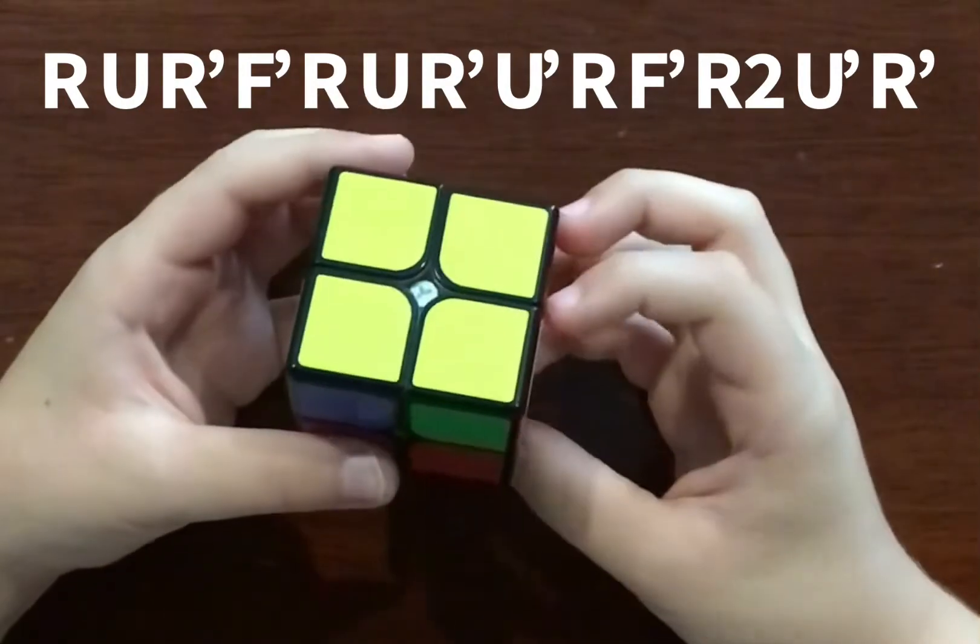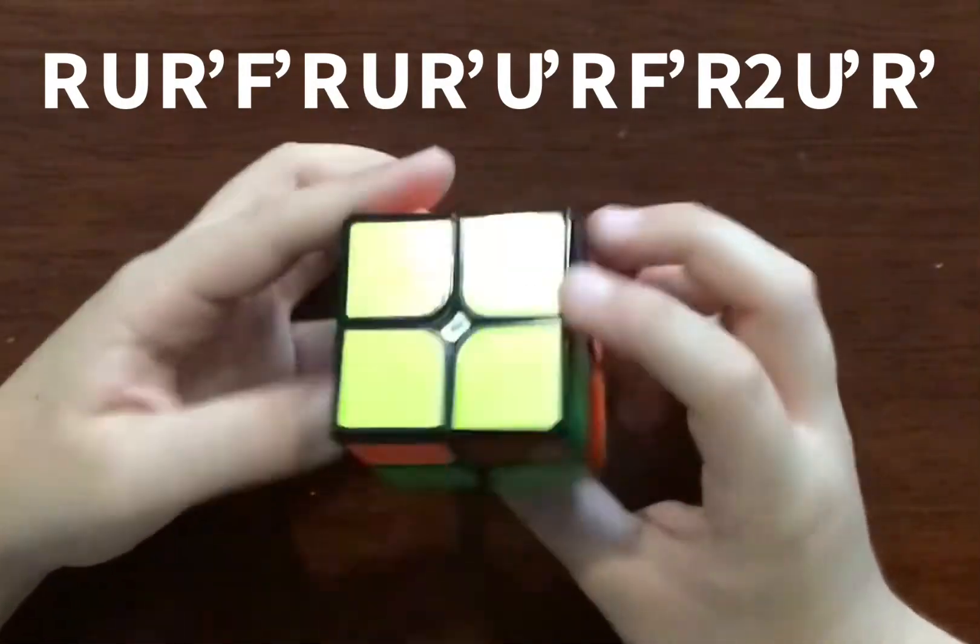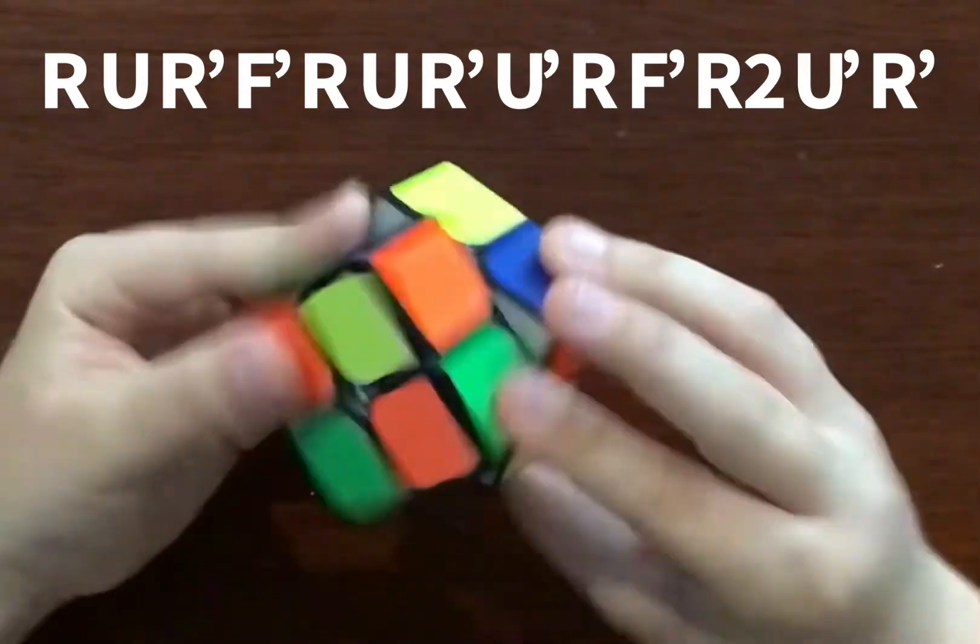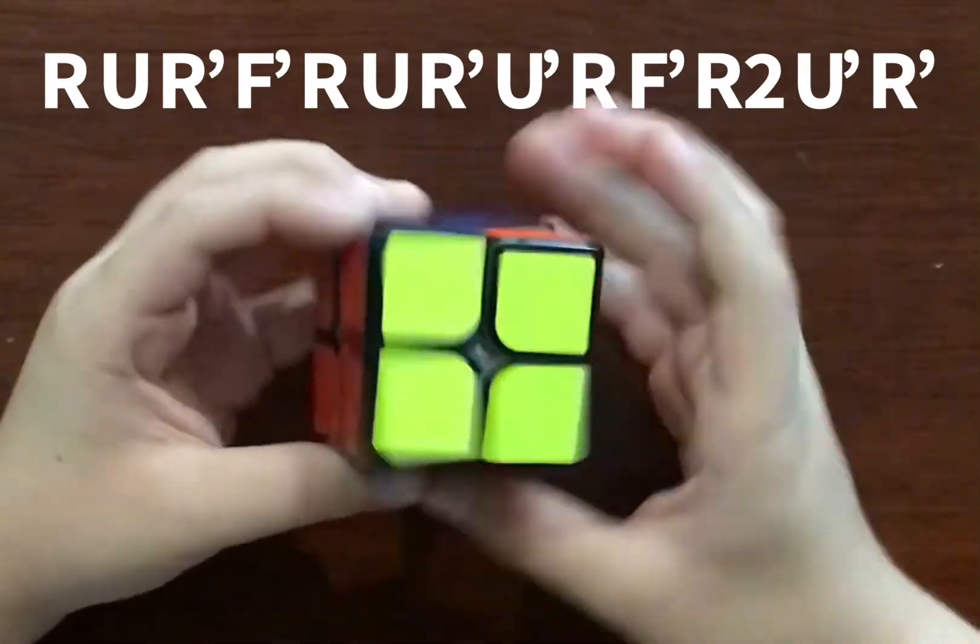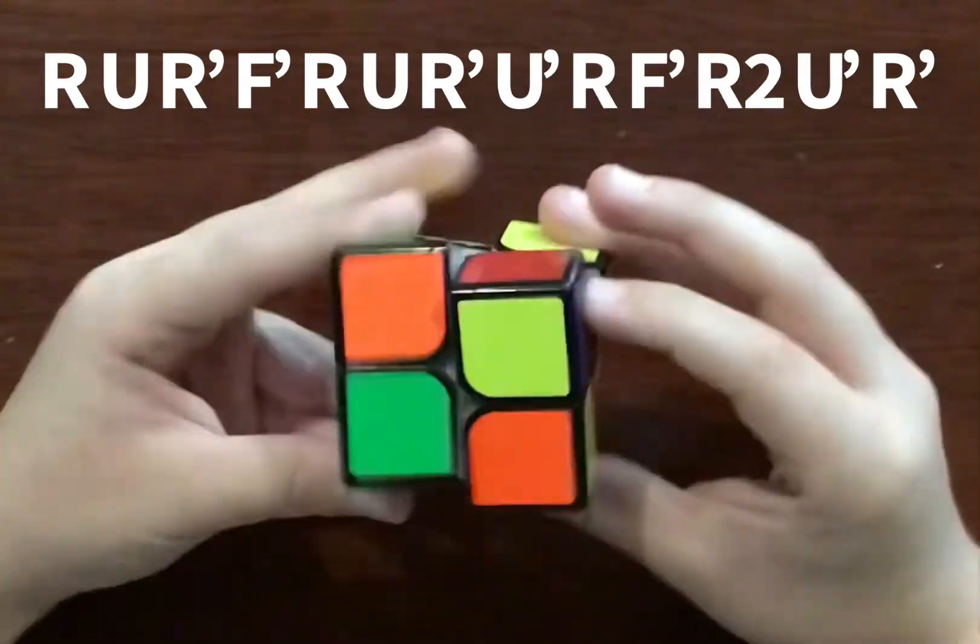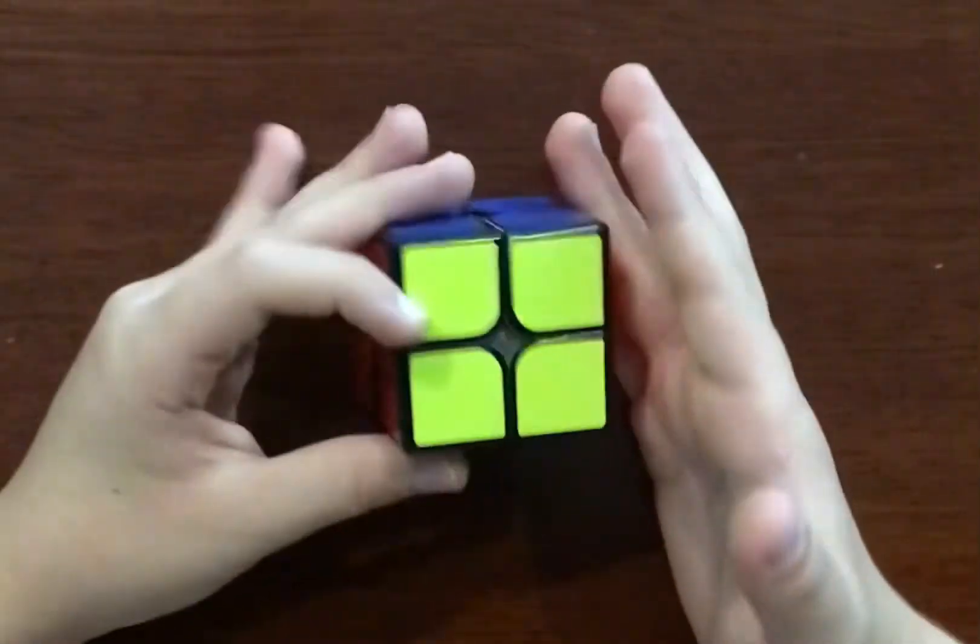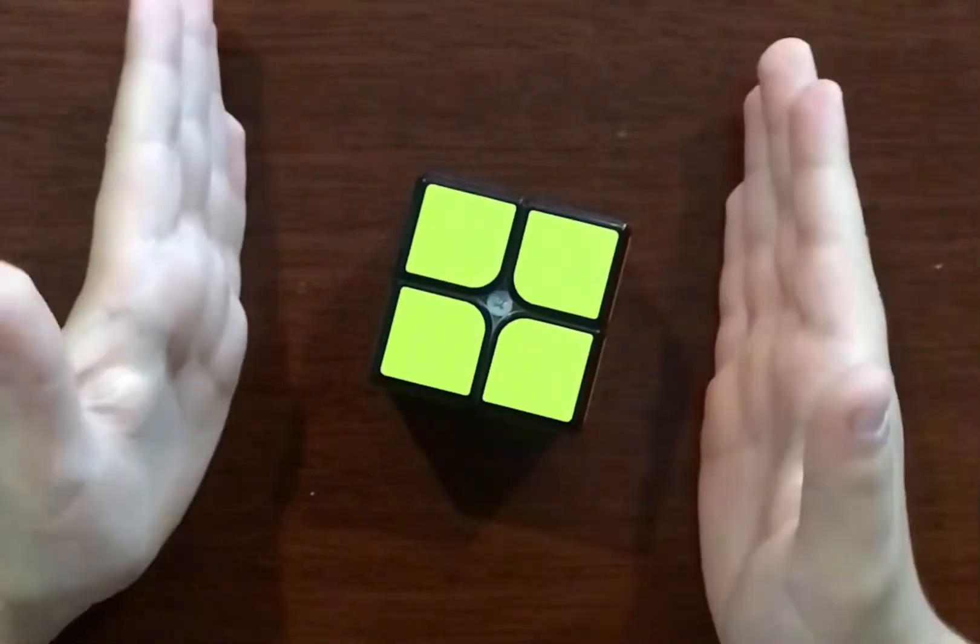Sometimes you might have a case where there's no bar. So you do this algorithm, the same algorithm. Then you do a U, do the algorithm again, and your cube is solved.